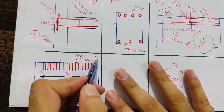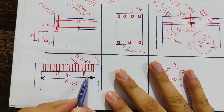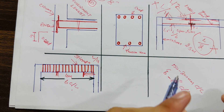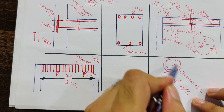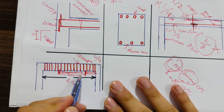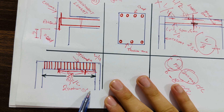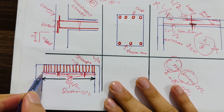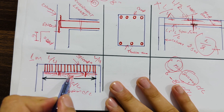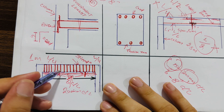For a span of four meters, at the distance of L/4 — which is one meter from each support — provide closer stirrup spacing of 150 mm center-to-center. In the middle portion, between the two L/4 zones, you can use 200 mm center-to-center. So provide closer spacing of 150 mm within L/4 of the supports, and 200 mm in the middle zone.